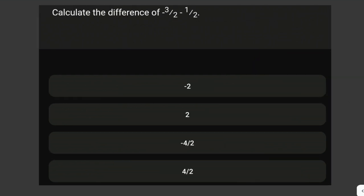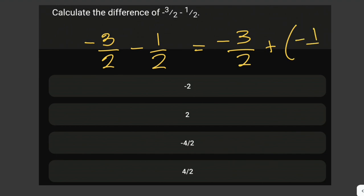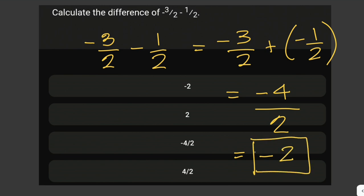Calculate the difference of negative 3 halves minus 1 half. Since the two fractions have the same denominator, we can directly subtract the numerators. We rewrite this as negative 3 halves plus negative 1 half. Negative 3 plus negative 1 equals negative 4, giving us negative 4 over 2. A negative number divided by a positive number gives a negative result, and 4 divided by 2 is 2. Therefore, the answer is negative 2.